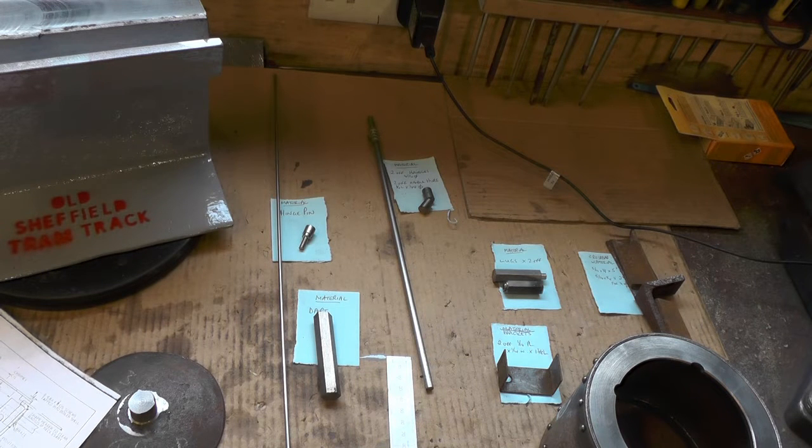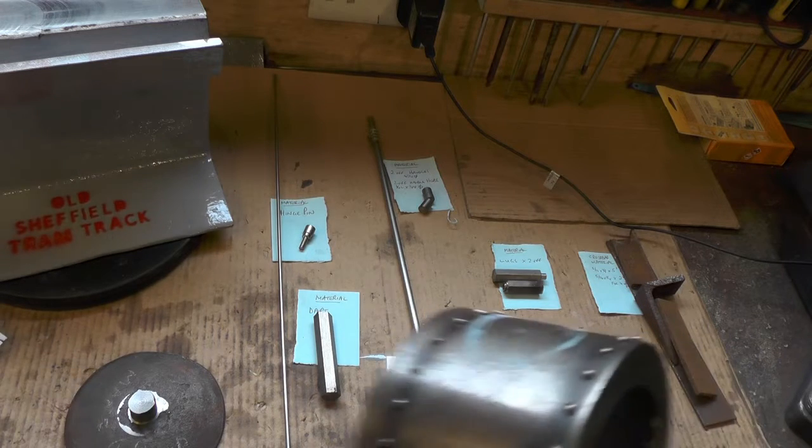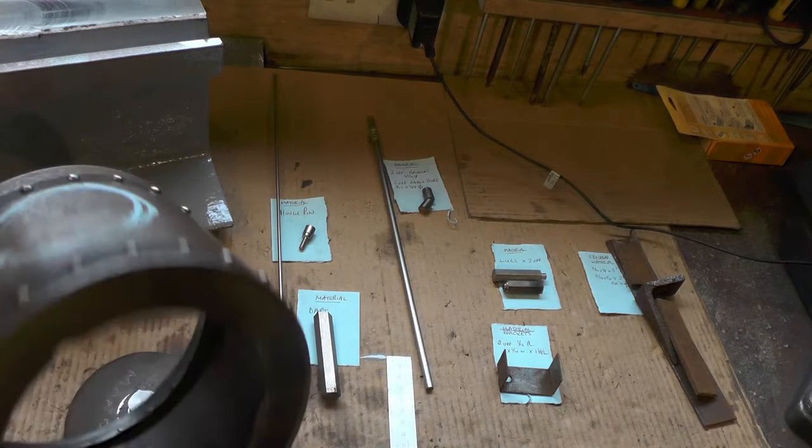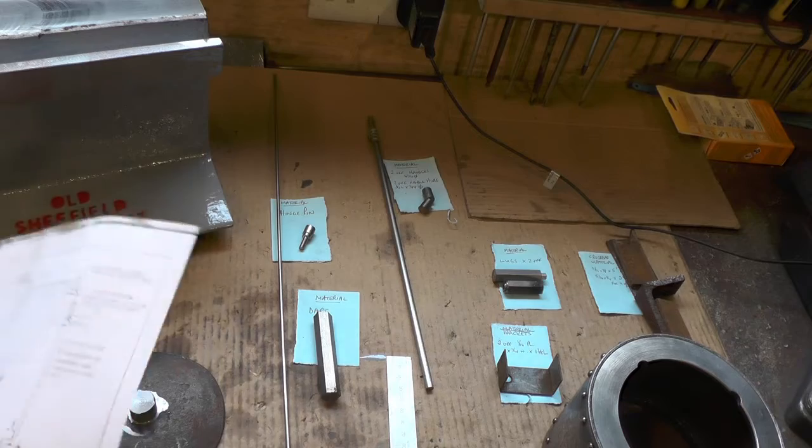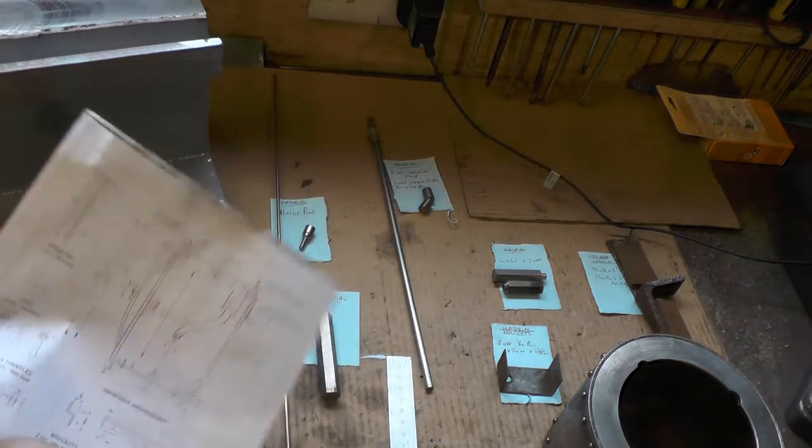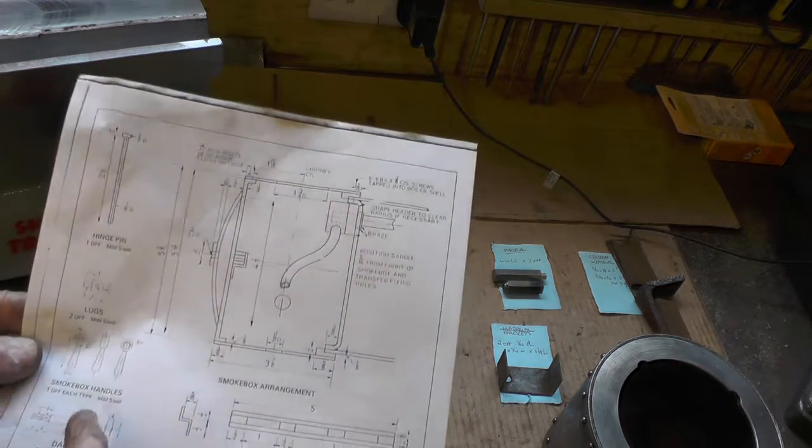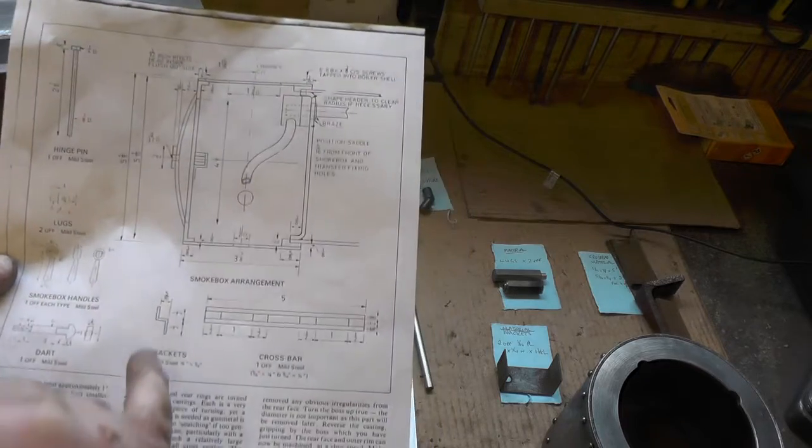And if you've seen part one, if you didn't see it, take a look at that. In this part I'm going to be making the hinge pin, the lugs, the handles, the dart, the brackets, the crossbar, and also machining the door up.